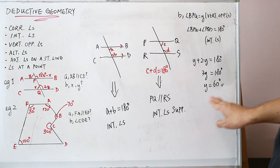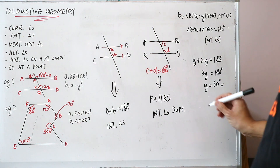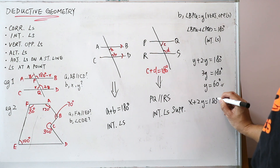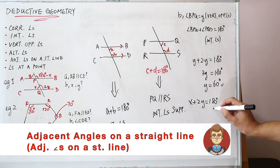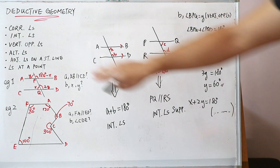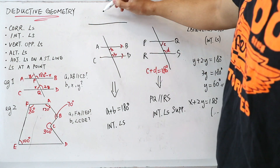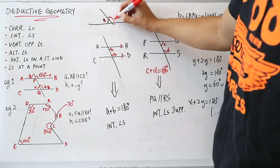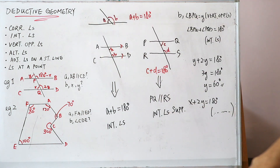After finding Y, we can find X. X plus 2Y equals 180 degrees — the reason is adjacent angles on a straight line. This means that for any straight line with another line dividing it, the two angles A and B on that line add up to 180 degrees.